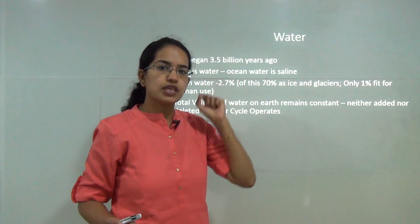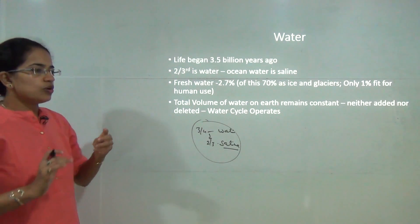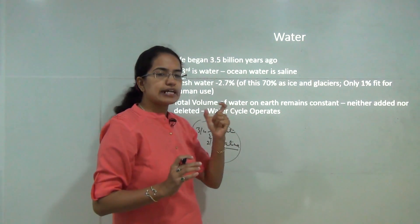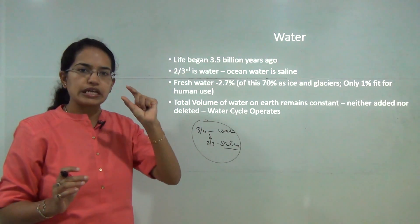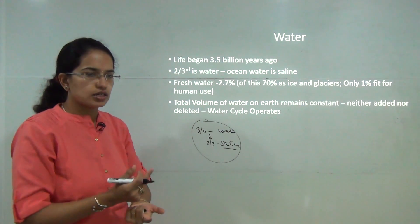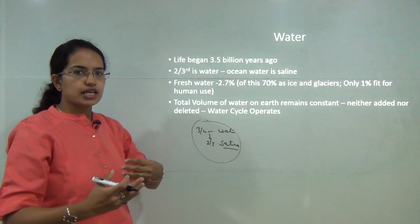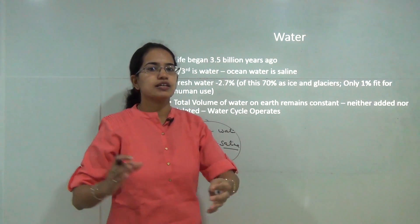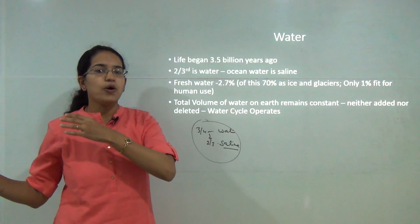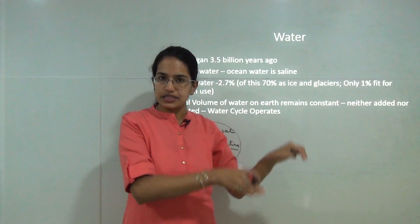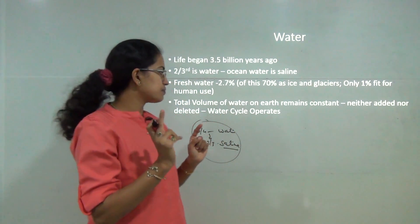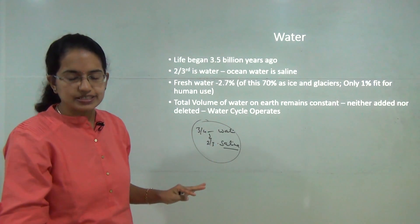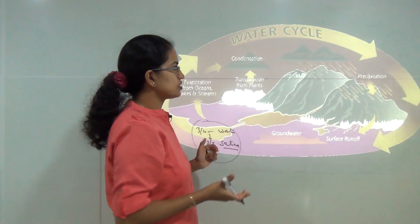The water cycle recycles the same water continuously. The water flowing in the Amazon billions of years ago may be the same water flowing in the Ganges today. There is neither addition nor suppression of water on the globe in net terms. Understanding water conservation is crucial since water fit for human consumption is very small in proportion to total water available.